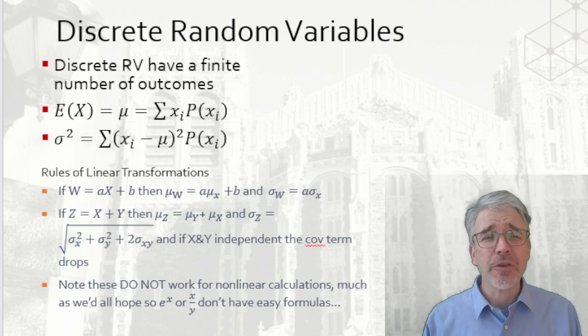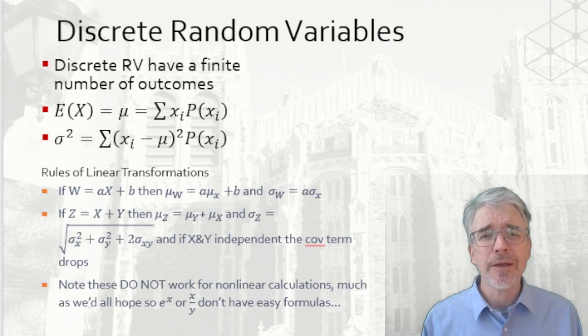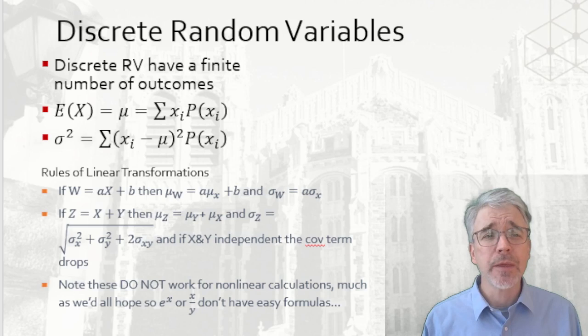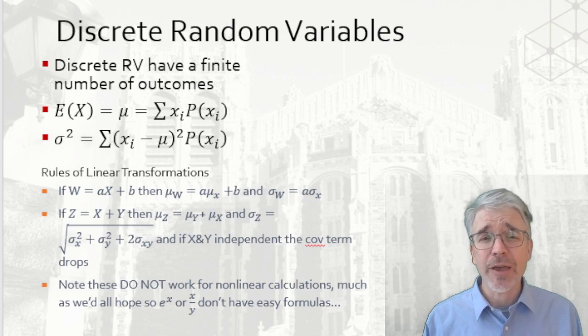We denote the expected value, E of X, as μ, a common bit using that Greek letter to represent the mean. The mean expected value of a discrete random variable is the sum of the probability of each of those occurrences times the value of X when the occurrence happens.